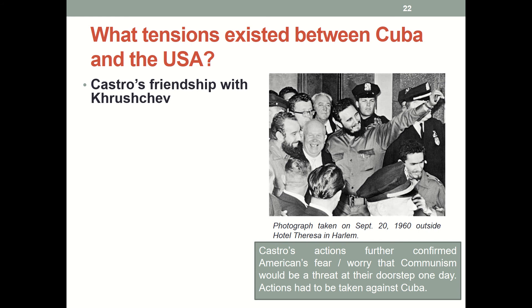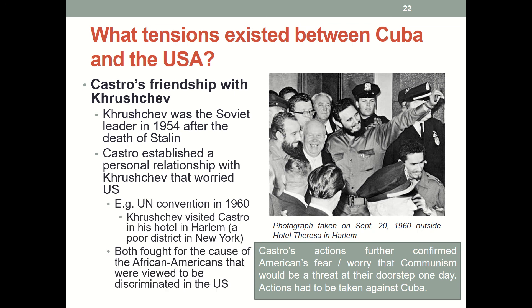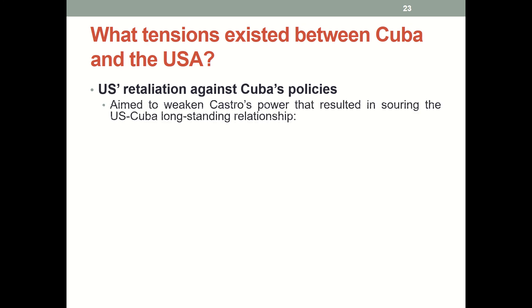It didn't help that Castro would later strike a friendship with the new Soviet leader Khrushchev. At this point, the US increasingly saw Cuba as a communist state at its doorstep and a threat to the entire Western Hemisphere. So the US started retaliating against Cuba's policies, aiming to weaken Castro's power, which resulted in souring the long-standing US-Cuba relationship.